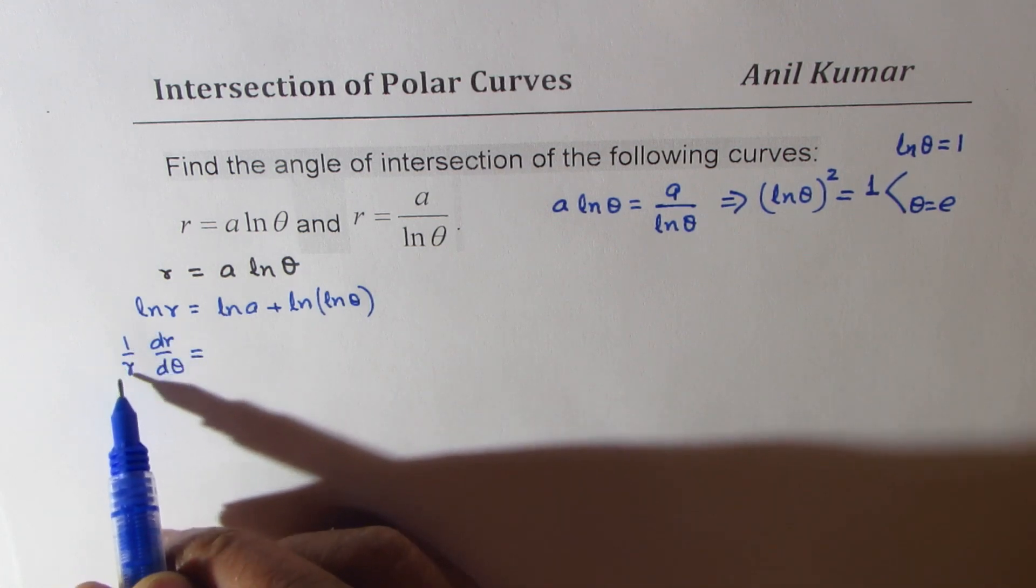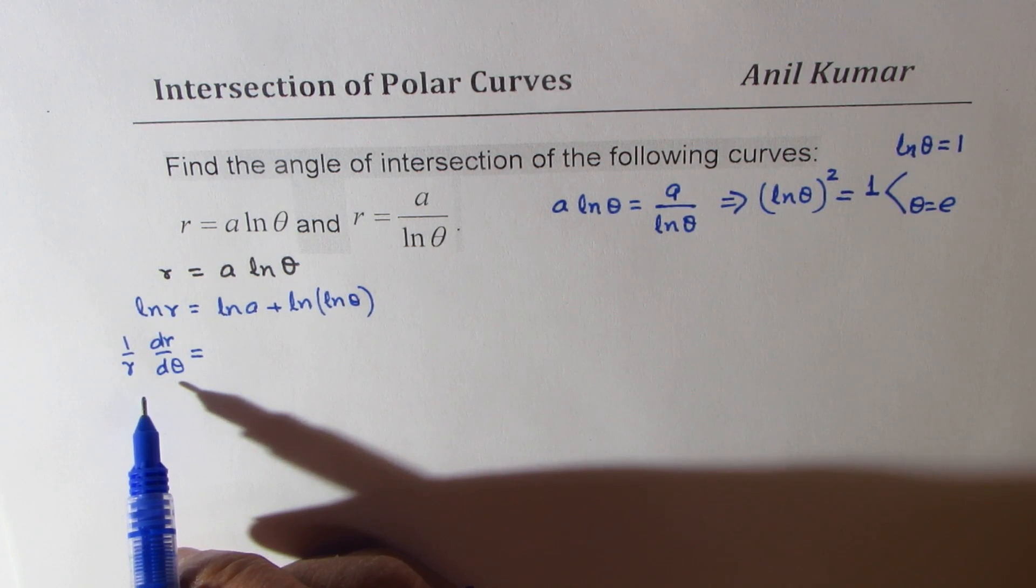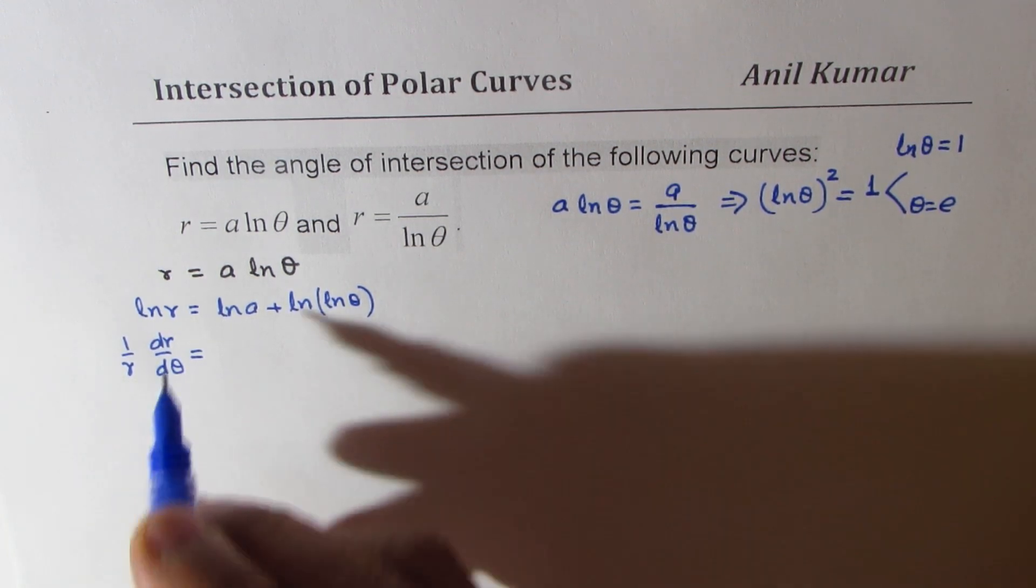And then we know this is equal to cot of phi, where phi is the angle which the radial vector makes with tangent.